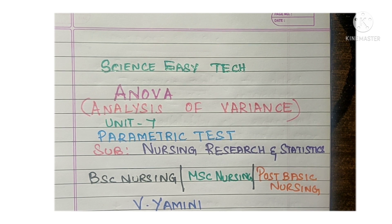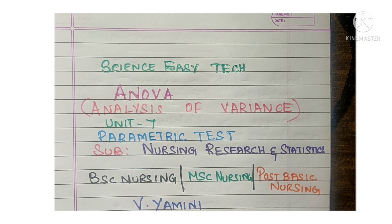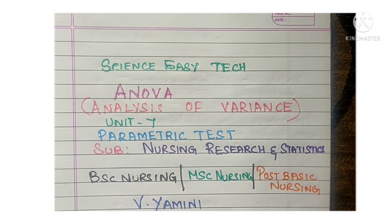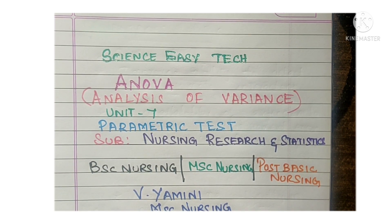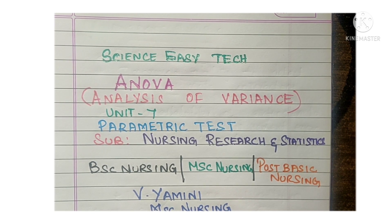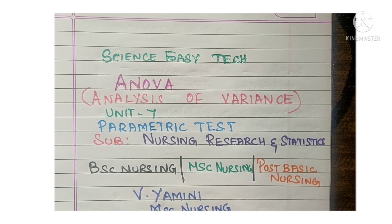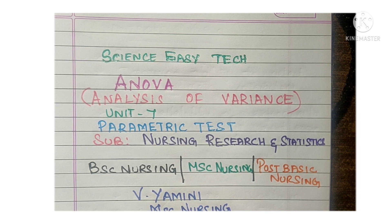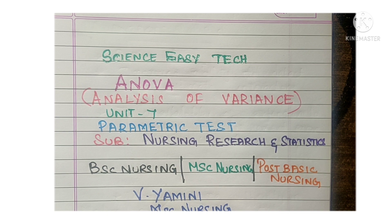ANOVA or analysis of variance comes under parametric tests. It comes under nursing research and statistics, unit 7 — introduction to statistics in nursing research. This is useful for BSc nursing students, MSc nursing students, post basic BSc nursing students, as well as students studying general biostatistics. Before moving on to the topic, if you are new to Science Easy Tech channel, please subscribe and press the notification bell icon to get our latest updates.